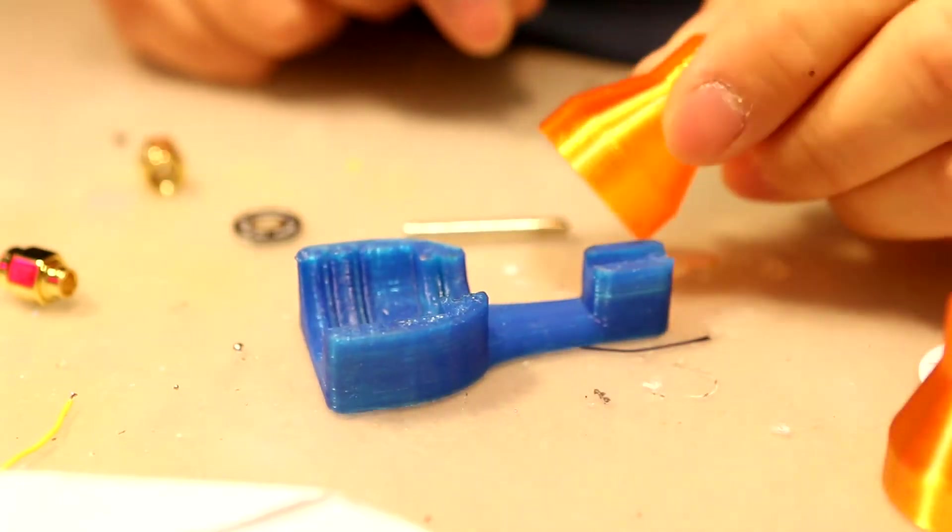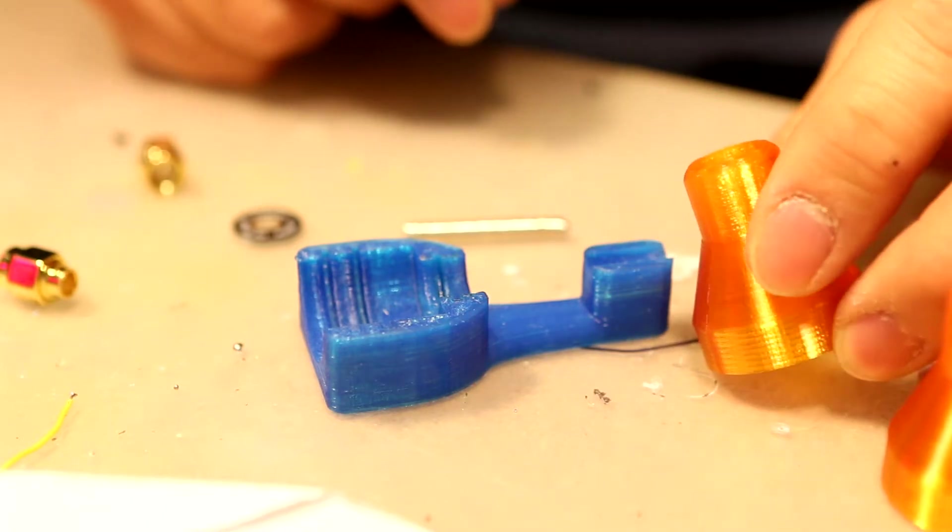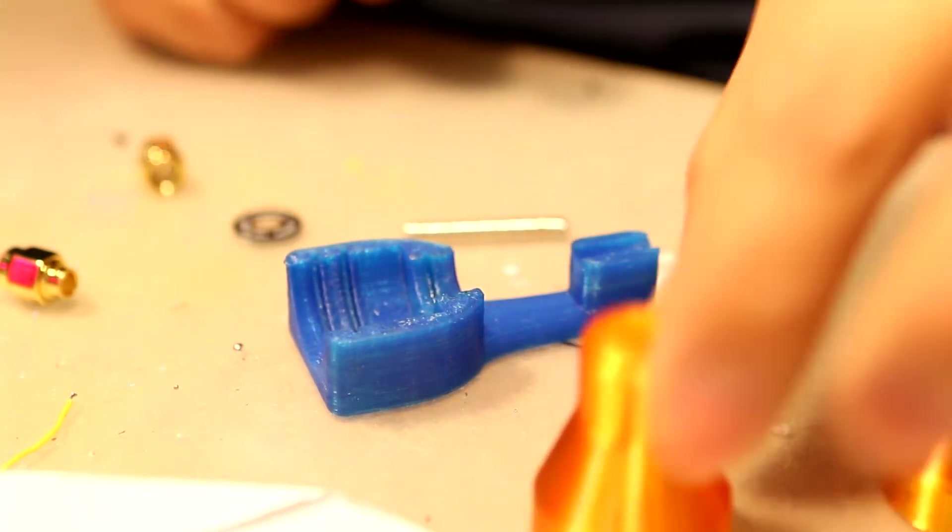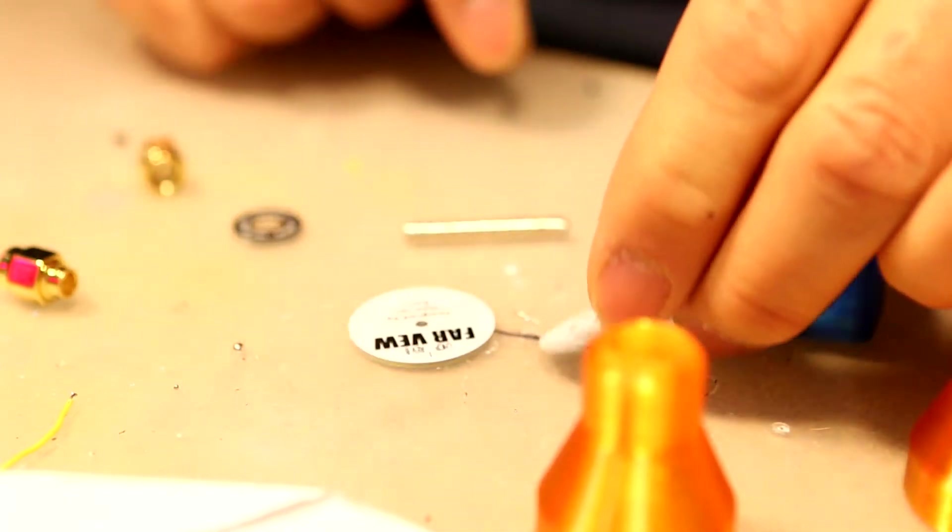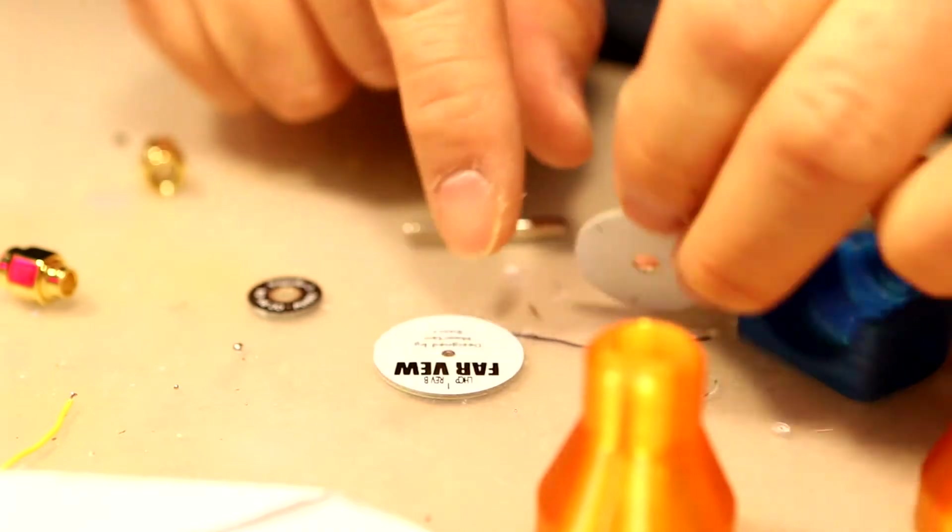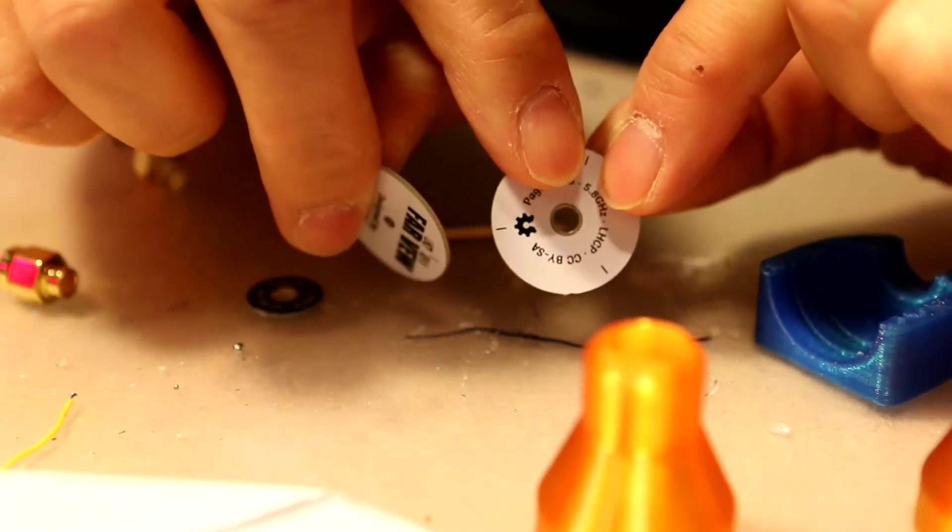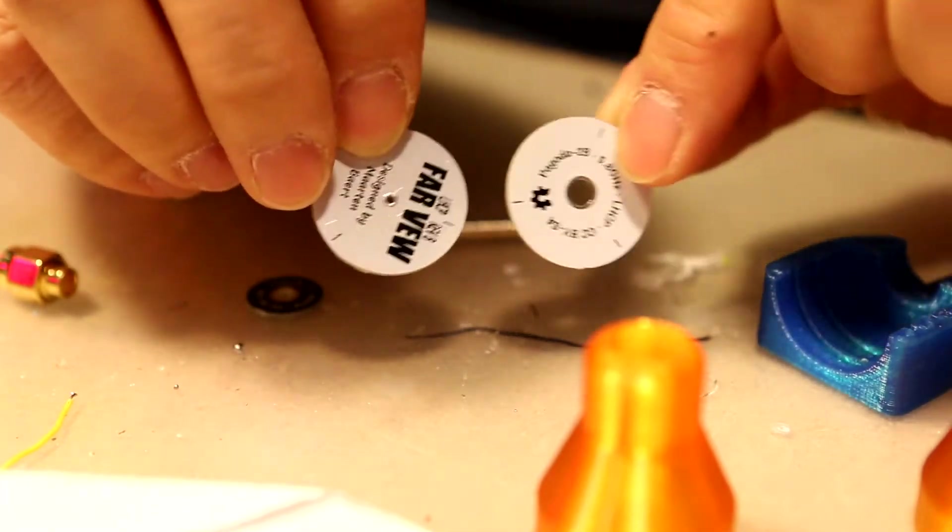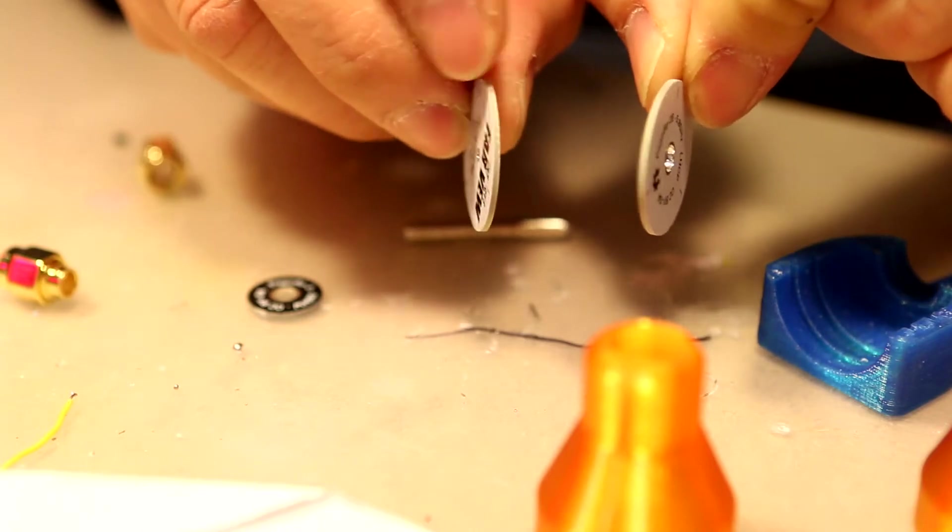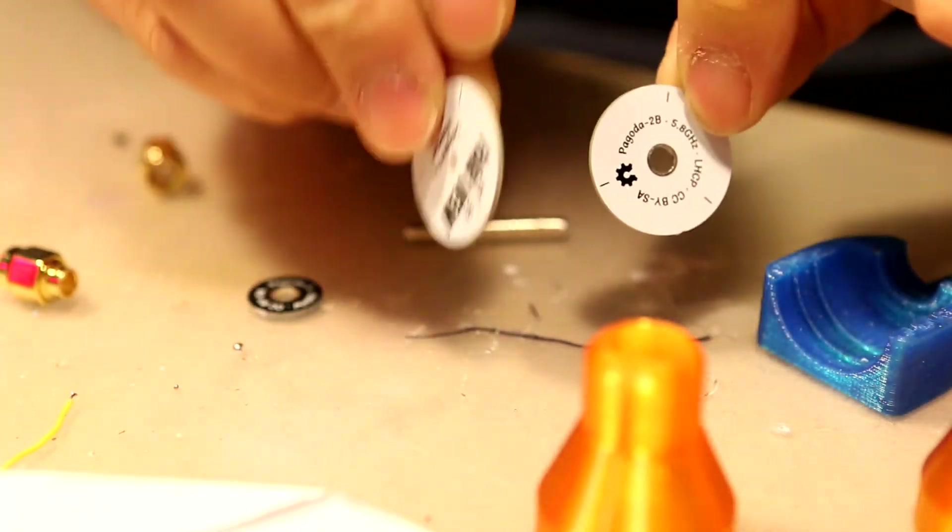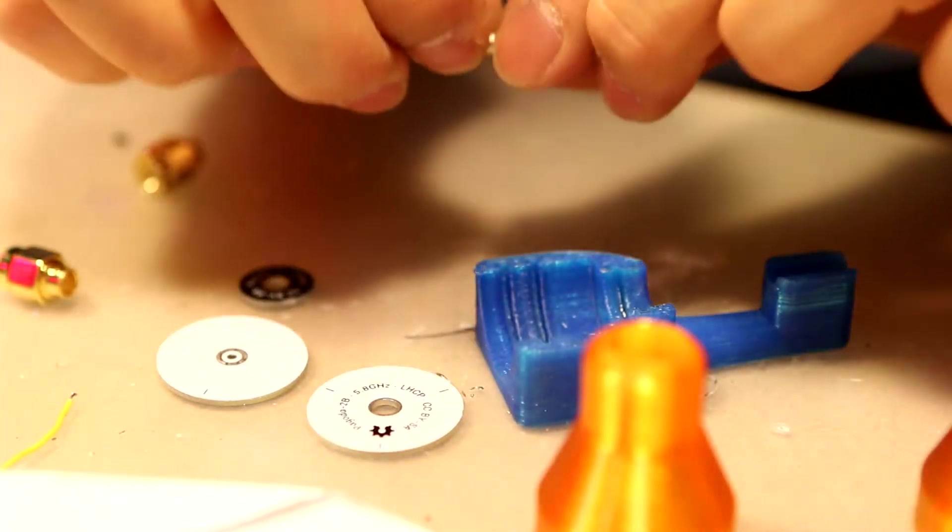So you're going to need a jig, a TPU cover which I've designed, but you can take the one on Farview, F-A-R-V-E-W.com, download it and add a hex section if you want to make your own. Then you'll need the PCBs. Each antenna has three PCBs. It's got the ground plane, the bottom plate, the bottom PCB, and the top one. And you'll notice they have these lines, these little lines on the outside. That's very important. They need to be lined up.